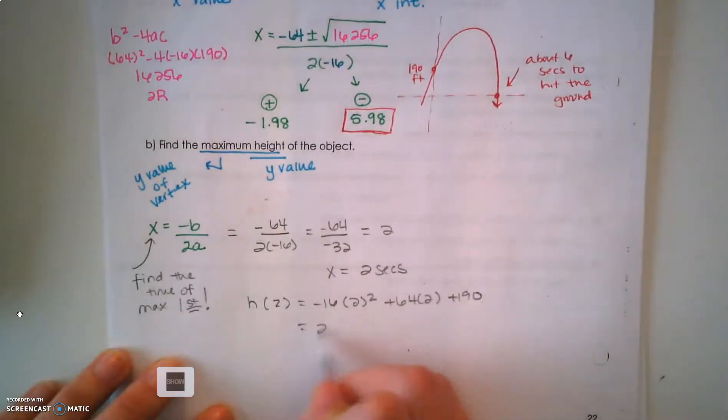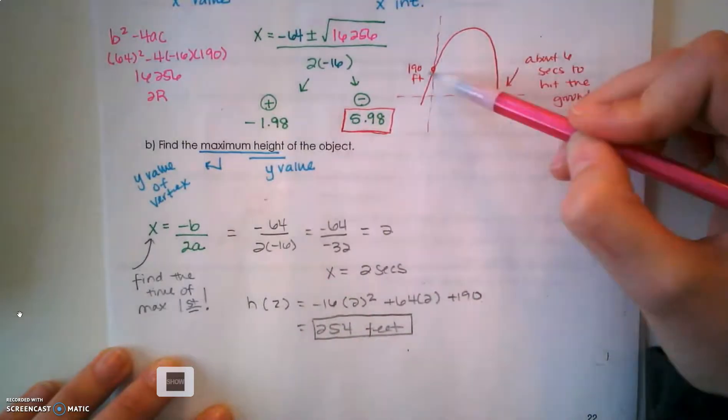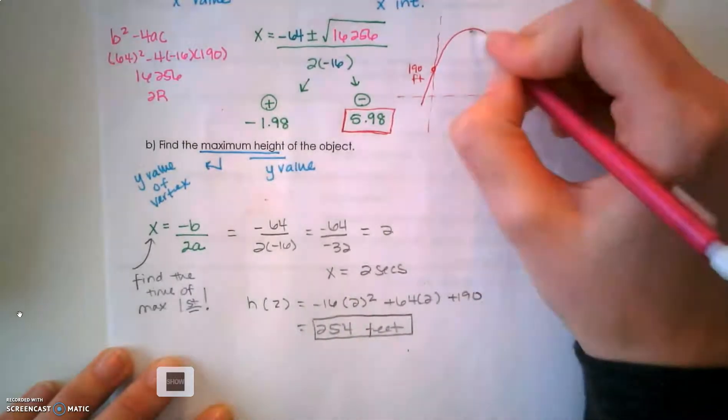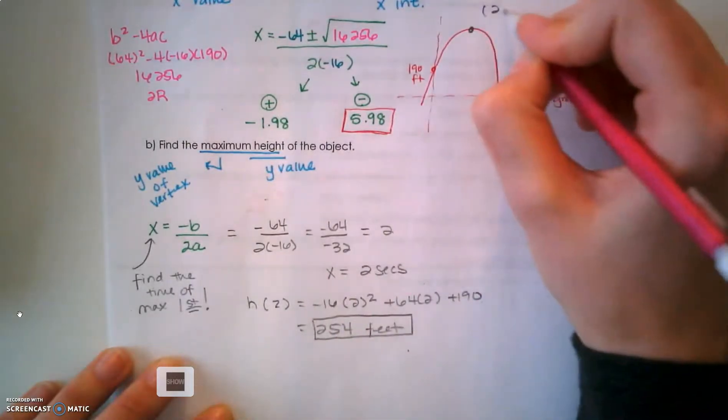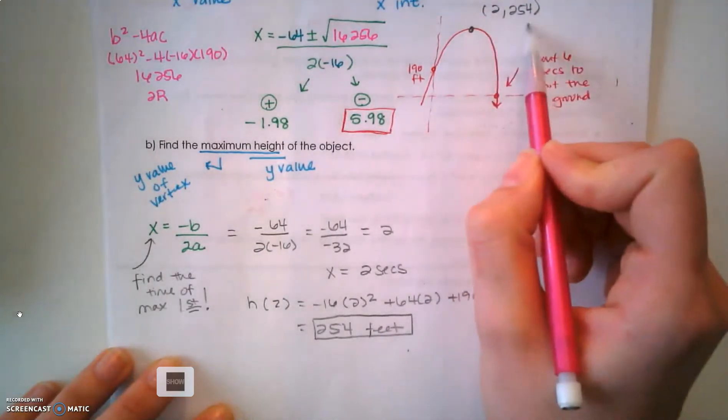I have to substitute this back into my equation. So I'm going to say h of 2 equals negative 16 times 2 squared plus 64 times 2 plus 190, and I get 254 feet. That's the maximum height that this object reaches as it flies up high in the air. Right here I have this point - at two seconds, I get this high.